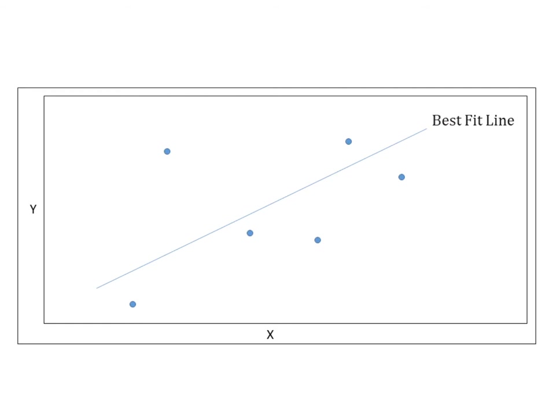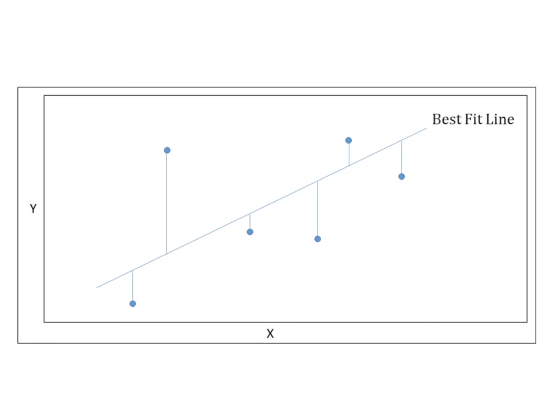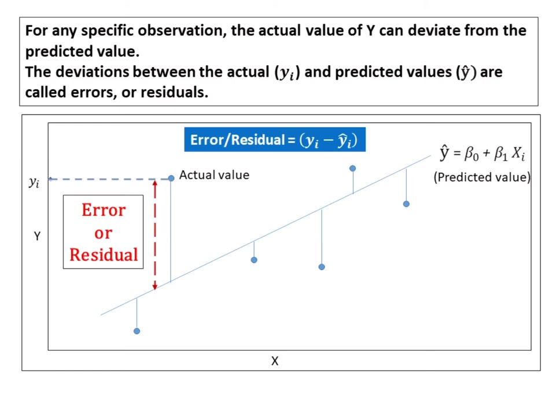Simple regression examines the relationship between a continuous response variable y and an explanatory variable x. Given a sample of n bivariate data, we want to estimate the true relationship between y and x in the population. Graphically, we would like to draw a straight line so that it seems to fit the data as well as possible. There is one line in particular that is very interesting, and it is called the best-fit line. For any specific observation, the actual value of y can deviate from the predicted value. The deviations between the actual and predicted values are called errors or residuals. A residual may be viewed as the deviation between the data and the fit, and is also a measure of the variability in the response variable not explained by the regression model.